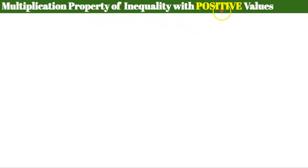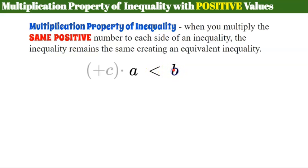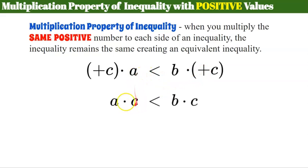We have a couple of properties I'm going to introduce you to. The first is the multiplication property of inequality when using positive values. This states that when you multiply the same positive number to each side of an inequality, the inequality remains the same, creating an equivalent inequality. If a is less than b and we multiply by positive value c, then a times c is less than b times c.